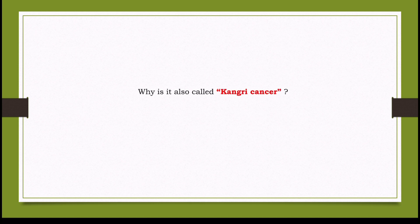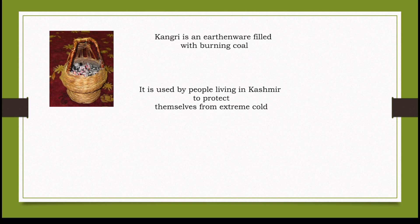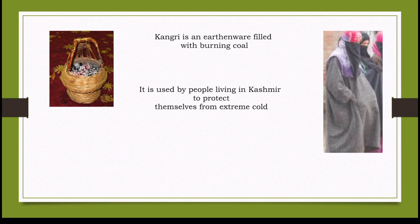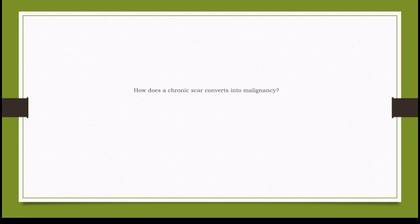What is Kangri cancer? In Kashmiri people, there is a cultural practice of wearing the Kangri — an earthen pot oven — underneath the flowing gown. This predisposes to repeated burn injuries and subsequent development of Marjolin's ulcers, popularly called Kangri ulcers.